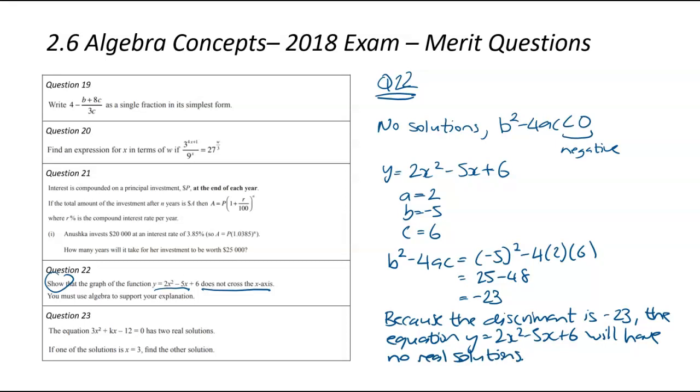So because the discriminant is negative 23, the equation y = 2x² - 5x + 6 will have no real solutions. Yeah, so I just think that was the easiest merit question we've looked at, of all of these ones. So a really good one, if it pops up, you know exactly what to do.